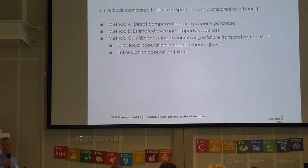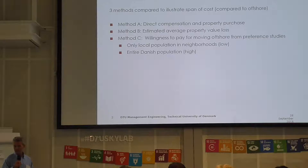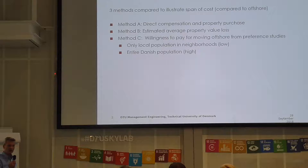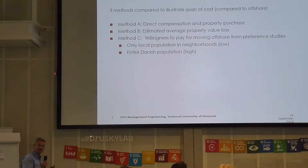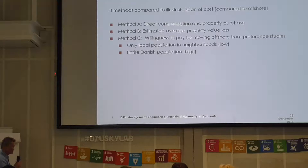It's also a bit of an uncertain area, because how can you address these intangible costs? The methods we are comparing: some are quite direct — we address the actual properties being affected in Denmark and assign values to them. Some you would have to buy; others you would have to compensate based on regulation. Then method B looked at all the properties and took an estimated average value loss — based on experience, how much do you lose if a turbine is placed near a property? On average, it was around 10%.